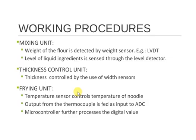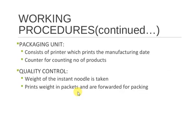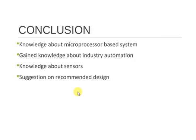In the frying unit, a temperature sensor controls the temperature of the noodles. Output from the thermocouple is fed as input to an ADC, and the microcontroller further processes the digital values. The packaging unit consists of a printer which prints the manufacturing date, and a counter for counting the number of products. In quality control, the weight of the instant noodle is taken, and weights are printed on packets before forwarding for packing.